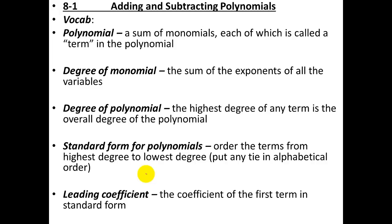First, Section 8.1: how do you add and subtract polynomials? This is something that should be reviewed, and it's also kind of common sense, but we'll go through it quickly and then do some examples. Vocabulary word: what is a polynomial? A polynomial is a sum of monomials, and each monomial in the polynomial is called a term.